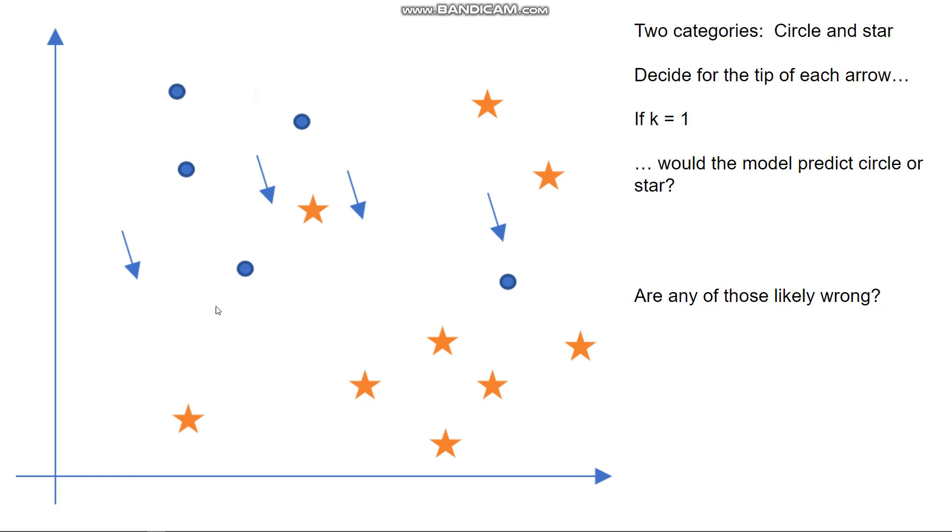Okay so for k equals one we should have this is a circle because it's closest to this one, this is star because it's closest here, also star closest here, this is circle because it's closest there. Whereas if k equals three, the three closest things to this point are circle circle star, so this will be circle. Three closest things to this point are circle circle star. So when k equals one, this would be a star, but when k equals three, this would be categorized as a circle. Here it would also be a circle, here it would be a star.